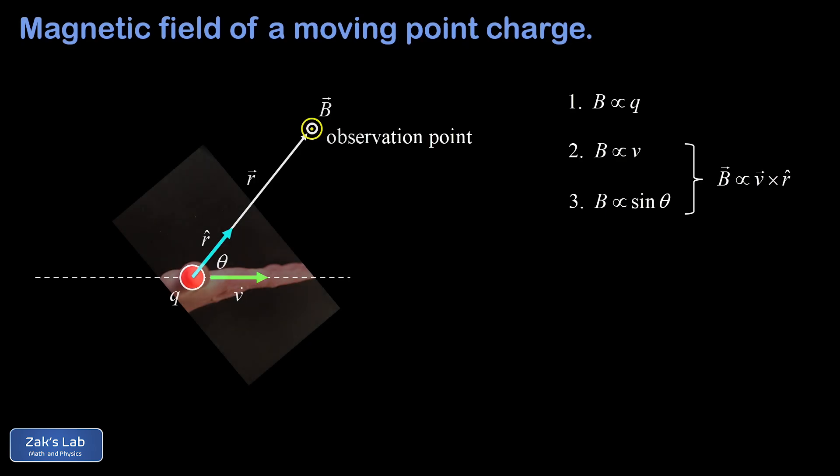But there's a bonus here. When we cross these vectors, we sweep the fingers of the right hand from V to r hat, and our thumb points in the direction of the cross product. That's outward, which is the direction of the magnetic field. So we're taking care of two proportionalities and the direction of B in a single cross product.